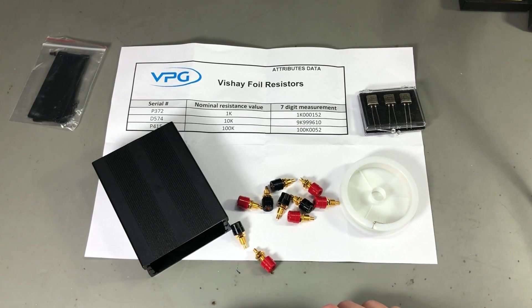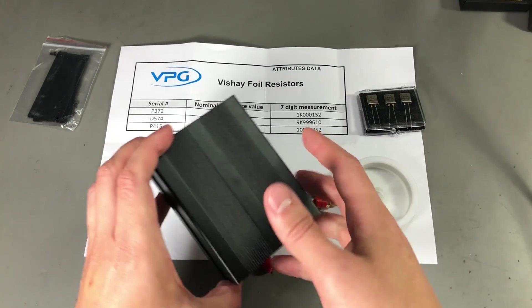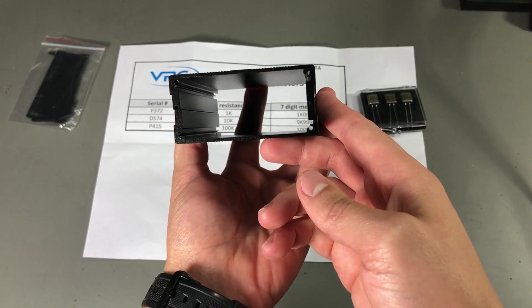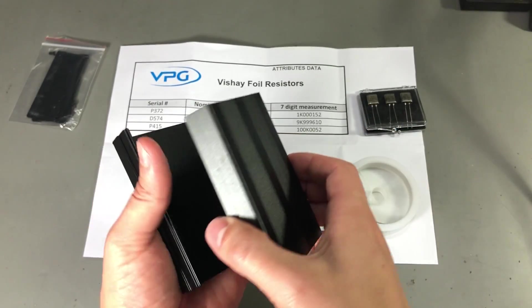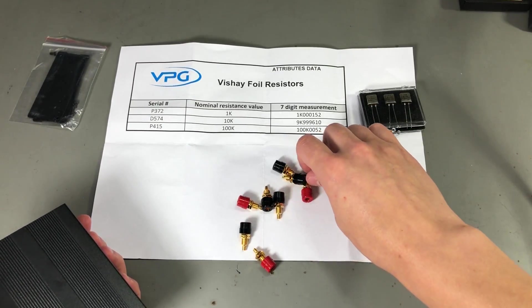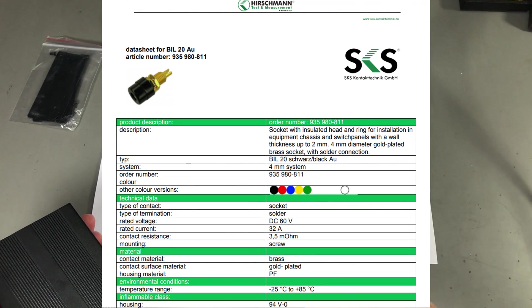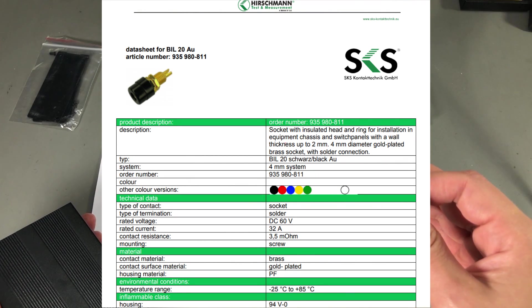For the actual construction I'm going to be using this extruded aluminum enclosure, these Hirschman binding posts and some silver copper wire.